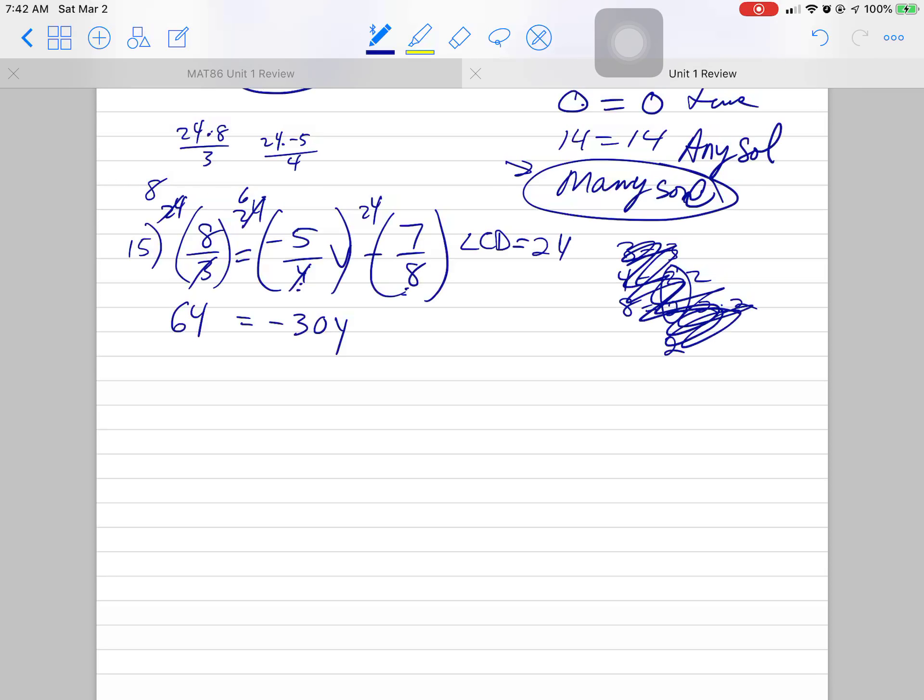Y. Is that a Y? That's a V. That's supposed to be a V. And then 24 times negative 7 over 8 is negative 21. Okay, much better looking.